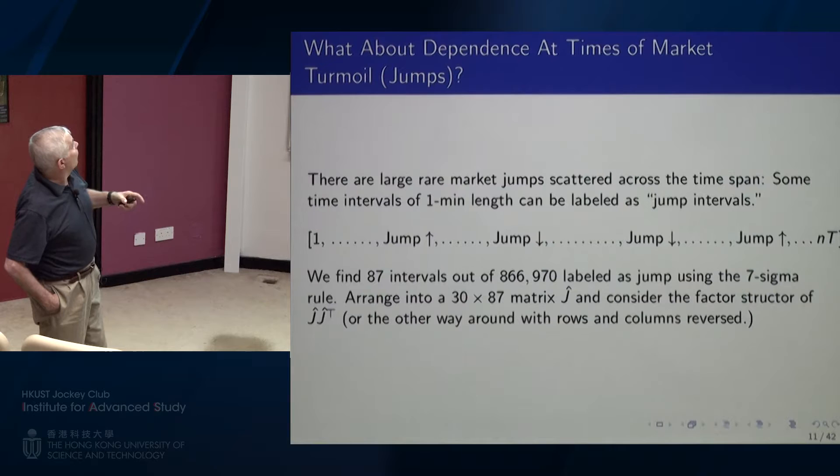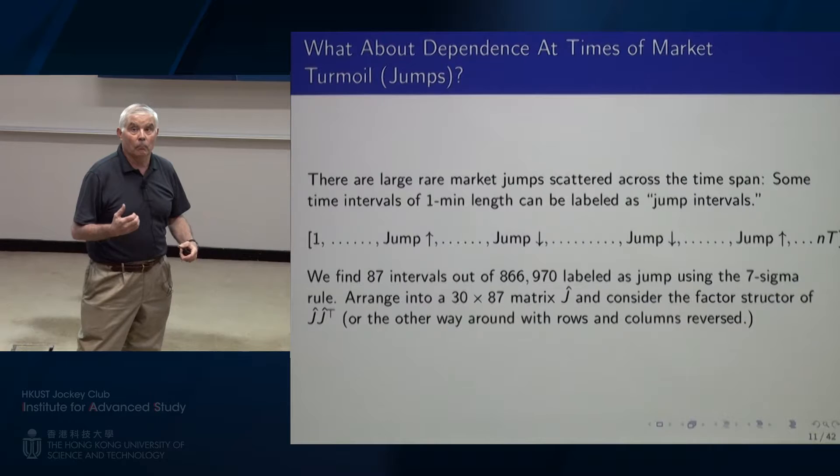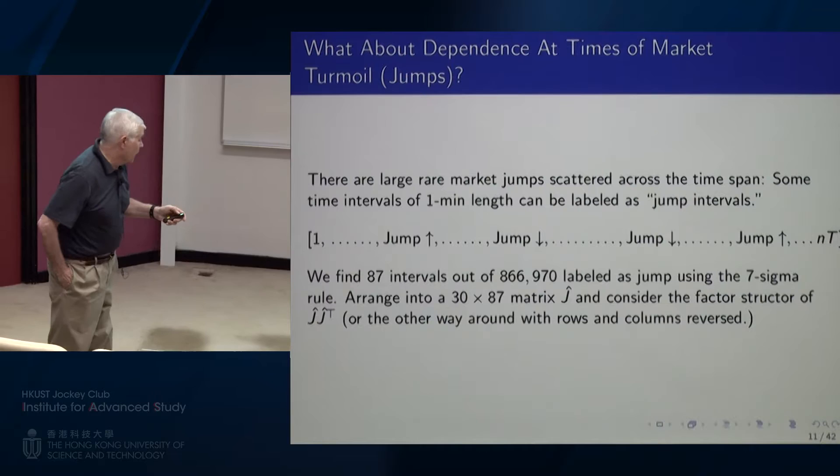Now, what about the dependence structure at times of market turmoil, when markets are taking these discontinuous moves? What does the dependence structure look like then? That's the question of this paper.